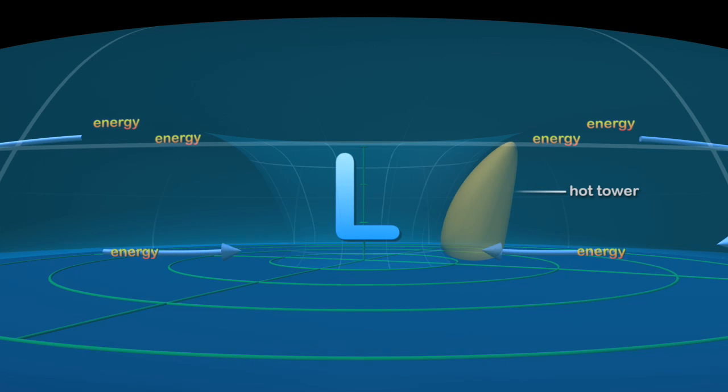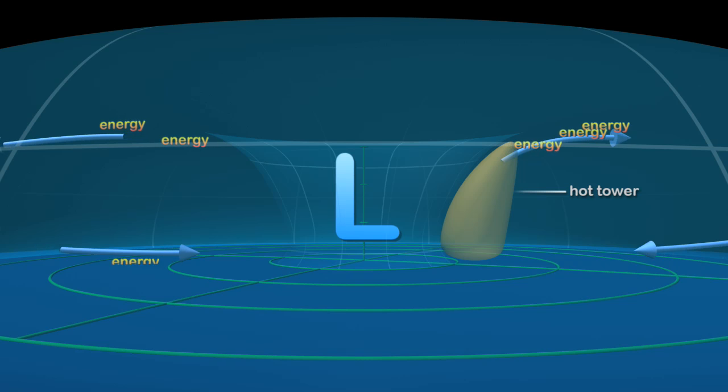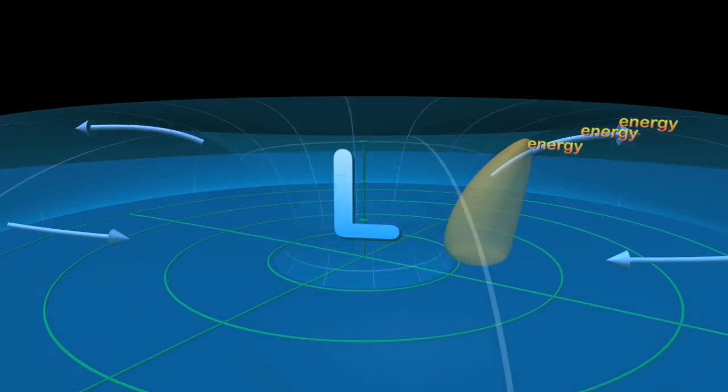Hot towers act like express elevators, accelerating the movement of energy into high-altitude clouds. This energy boost tends to strengthen the hurricane.